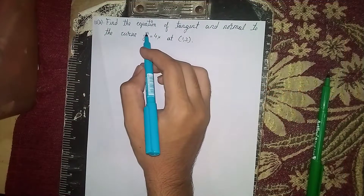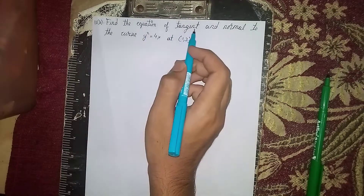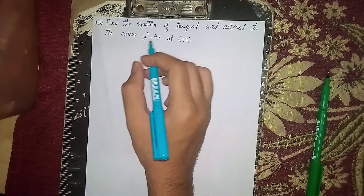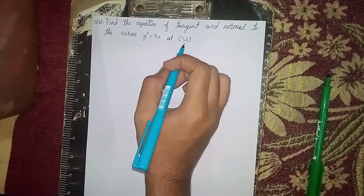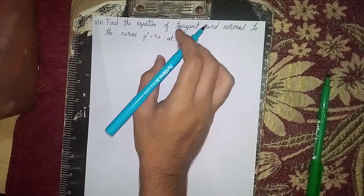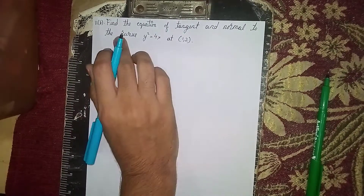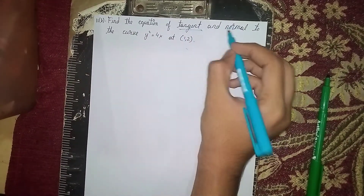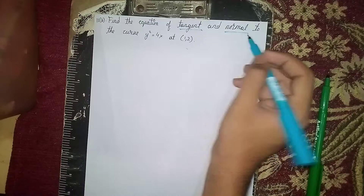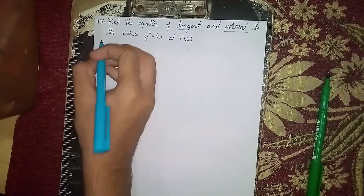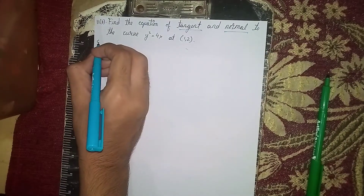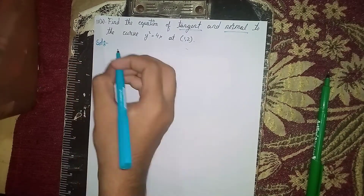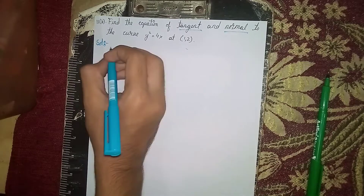Find the equation of tangent and normal to the curve y squared equals 4x at the point (1, 2). So what we have to find is the equation of tangent and normal. Let's start the problem solution.